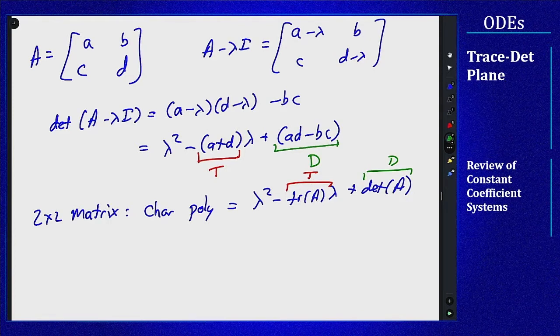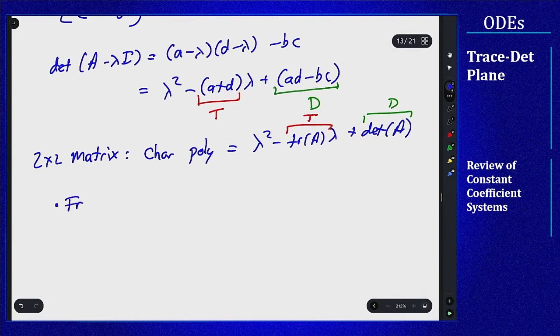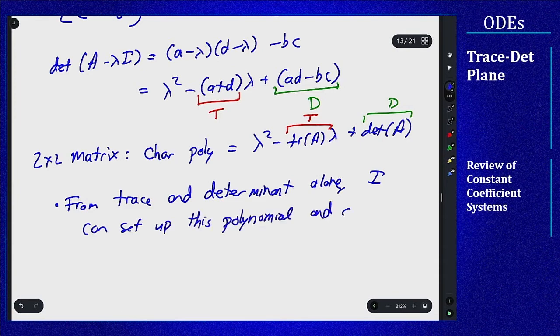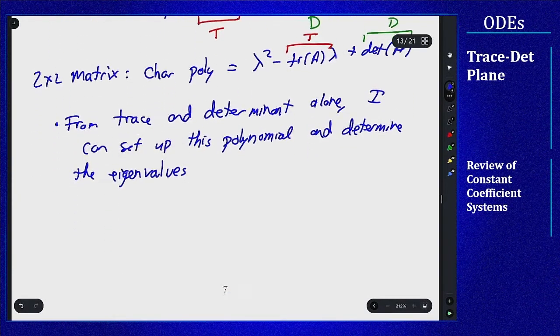And for the sake of notation I'm just going to call this T and this D from now on, just for the sake of writing things out a little bit easier. So it means that just by knowing the trace and determinant I can write this polynomial, I can therefore look for the eigenvalues. So from trace and determinant alone I can set up this polynomial and determine the eigenvalues.